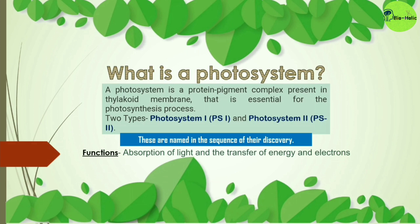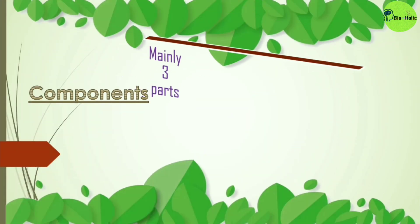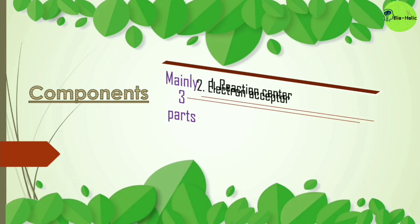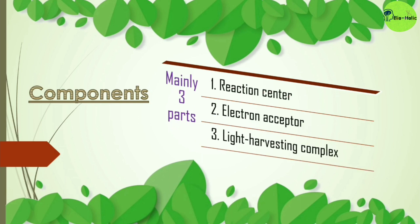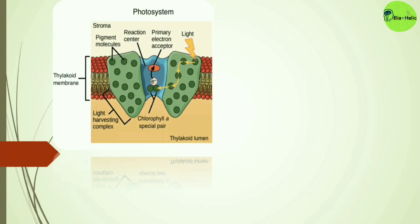The photosystem has mainly three parts: first, the reaction center; second, the electron acceptor; and third, the light harvesting complex. Note that the electron acceptor is many times considered as part of the reaction center. Let's now learn about each of these parts in more detail.